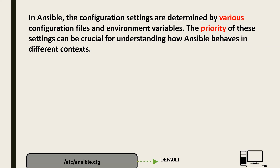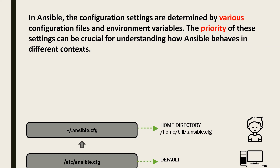Whenever Ansible is installed, it picks its configuration settings from a default file: /etc/ansible.cfg. Now, for example, one user will want to use some predefined configuration from their home directory. They would place the Ansible configuration file inside their home directory path, which would be /home/bill. The configuration file will start with a dot — this is something you need to take care of, otherwise it will not be picked. At this point, whatever settings are placed inside that configuration file will override the default settings.